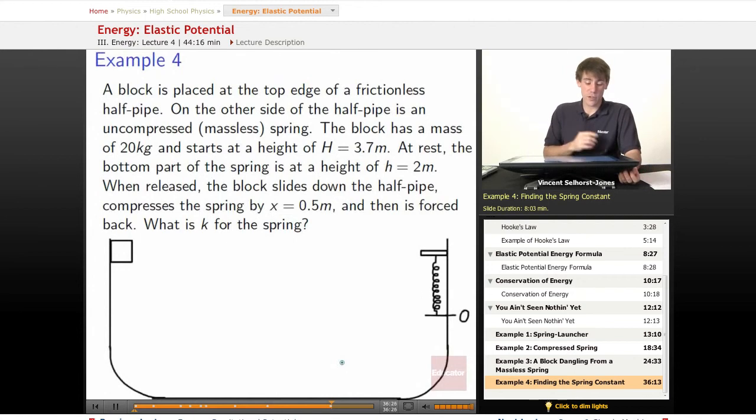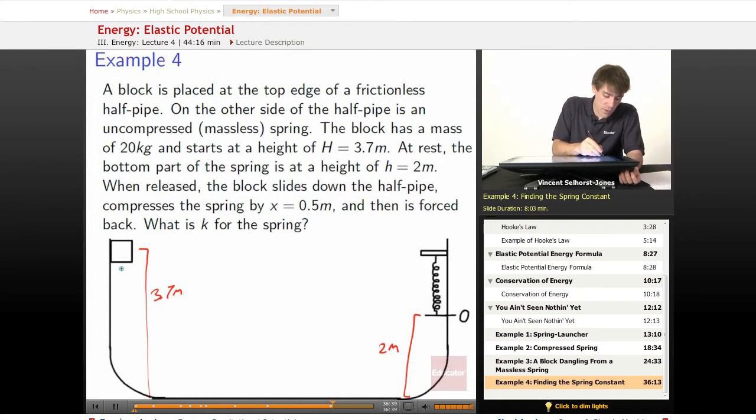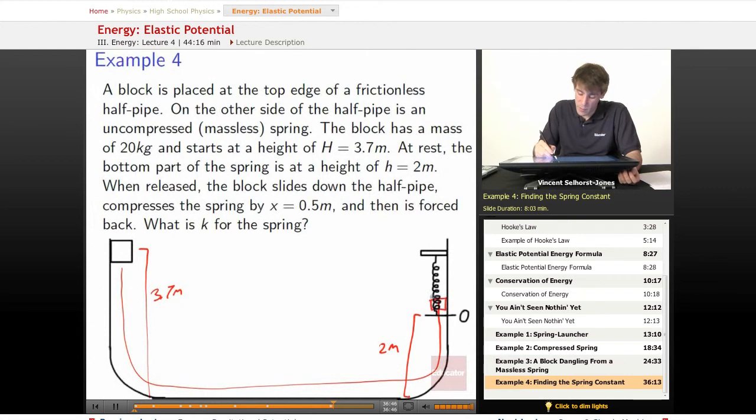The block has a mass of 20 kilograms and starts at a height of 3.7 meters. At rest, the bottom part of the spring is at a height of 2 meters. When released, the block will slide down the halfpipe, compress the spring by x equals 0.5 meters.